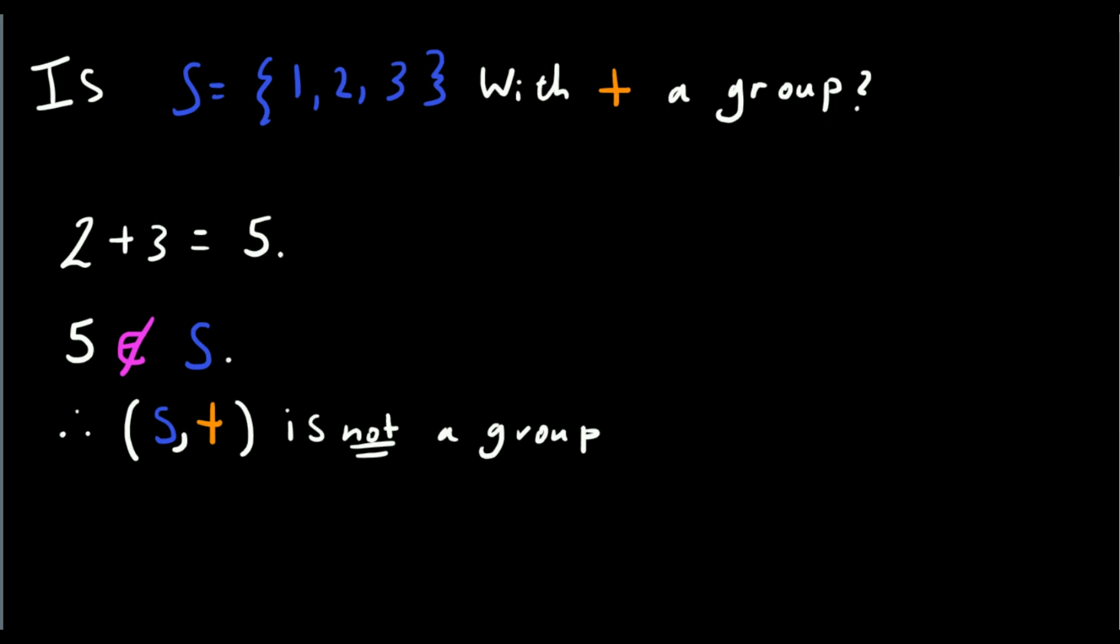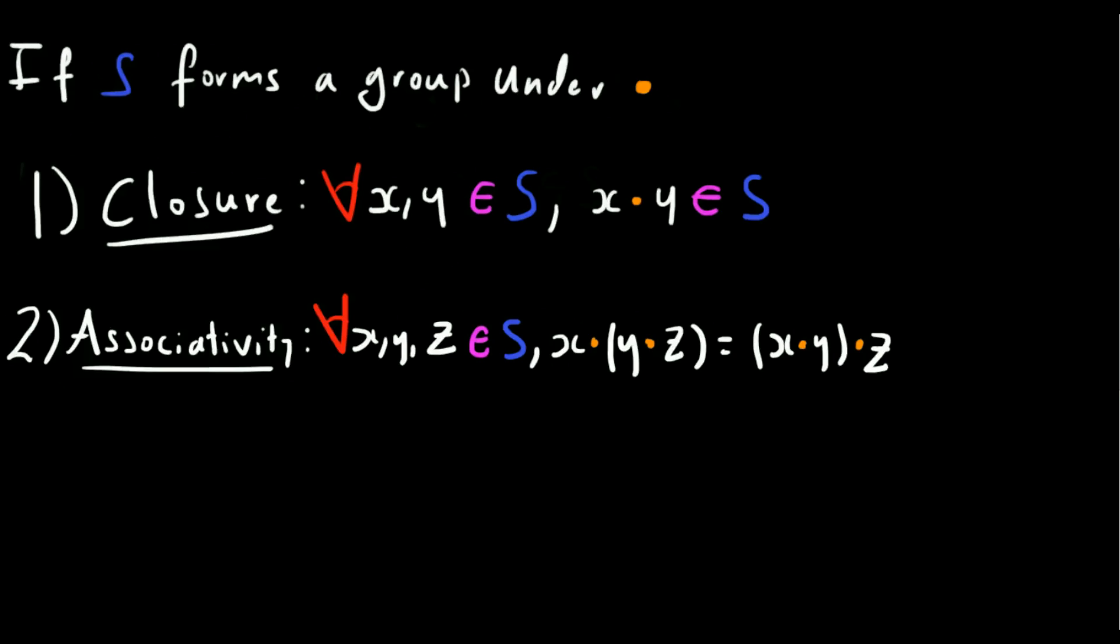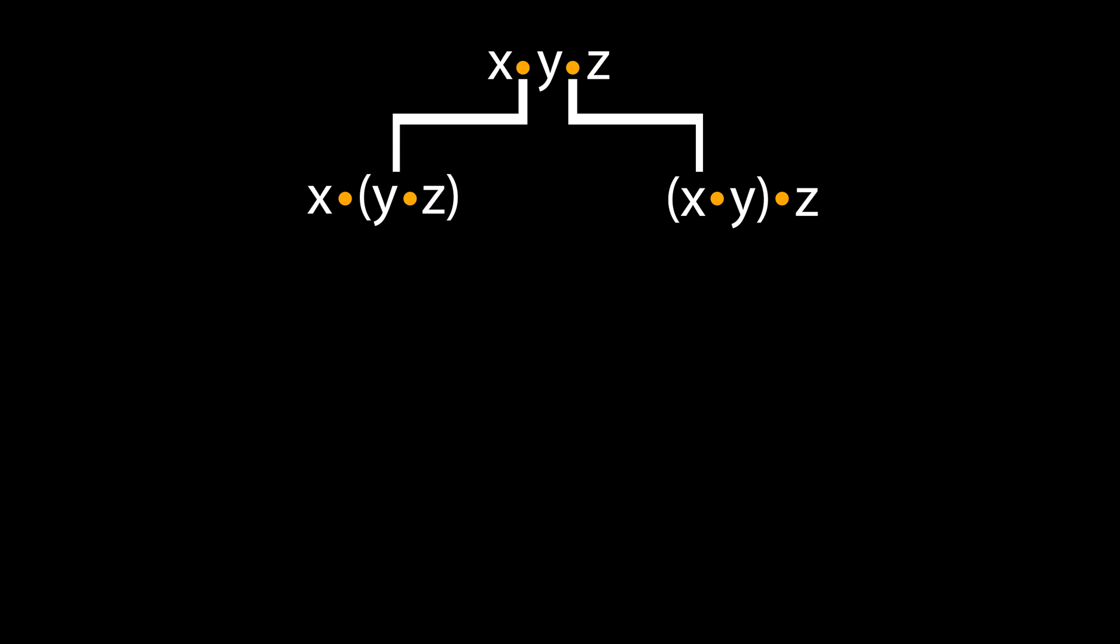That being said, let's look at the second one. The second axiom is associativity. This axiom states that for every X, Y, and Z in the set, if we first combine Y and Z and then combine that with X, it's the same thing as combining Z with the combination of X and Y. This is essentially the statement that ordering doesn't really matter. We can write X.Y.Z without any brackets to specify which ones to combine first. It just doesn't matter.